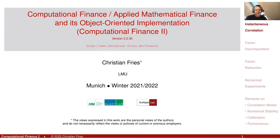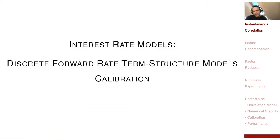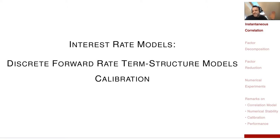Although in our interest rate term structure model the correlation may not be the most important parameter — the volatility is really important because it creates the fit to options and we can use it to fit all swaption products — correlated Brownian motions and instantaneous correlation are an important and somewhat universal part of many models.